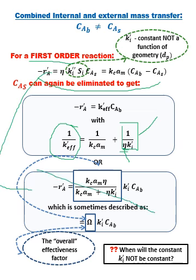I am not going to test you on the overall effectiveness factor at all. I find that it just confuses students. So just remember for first order reactions, this is the form of the effective rate constant modified by η.